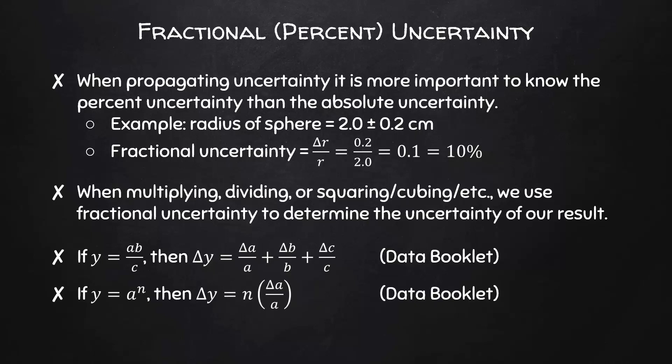Furthermore, if y equals a to the n, then the uncertainty of y is equal to n times the fractional uncertainty of a. Both of these formulas can be found in your data booklet. That's it for now. See you next time.